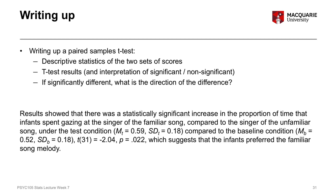To write it out, we could say something like: results showed that there was a statistically significant increase in the proportion of time that infants spent gazing at the singer of the familiar song compared to the singer of the unfamiliar song under test conditions, then listing the mean and standard deviation of that group compared to the baseline condition and listing those descriptive stats, then giving the actual t-test results, and then a comment on implications — which suggests that the infants preferred the familiar song melody. So you have the descriptive details, the means and standard deviations for both conditions, the actual t-test results, a statement of statistical significance, and the direction of the difference.